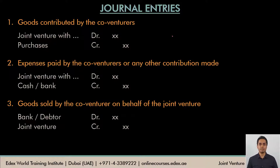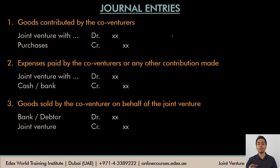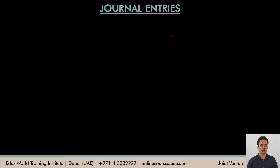Once these transactions are complete, we still need to find the profit made in the joint venture business. We cannot just take the balance left in the joint venture account as profit or loss, because all transactions of the joint venture business — like we did in Method 1 — have not been recorded here. The co-venturers have just recorded their own transactions, so we need to prepare a separate memorandum joint venture account to calculate the profit or loss.